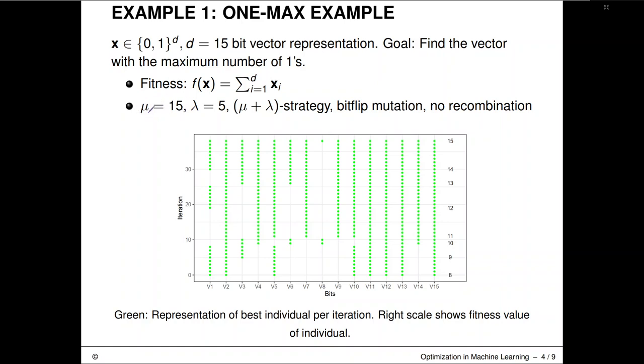Here we run a genetic algorithm with mu equals 15, so 15 elements in our population. We generate five offspring. We run a mu plus lambda strategy with bit flip mutation. So apparently here we don't even do any recombination. In a certain sense this is just a kind of local stochastic search. And here in the visualization you can see how our population develops. We only represent the best individual per iteration. So here on the x-axis you can see the bits and with the green dot you can see whether a bit is active. On the y-axis you can see how the iterations develop and you can see here in this last line how the fitness of that best individual develops. In the beginning the best individual has eight bits flipped on, nine, ten and so on and at the end we have found a solution where all bits are active.